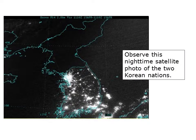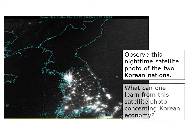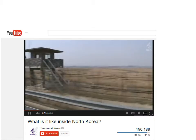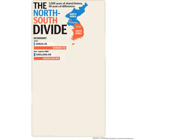Observe this nighttime satellite photo of the two Korean nations. What can one learn from this satellite photo concerning Korean economy? Here's their economy in gross domestic product and per capita gross domestic product, which means domestic product divided by the number of people living in the country. In both cases, the orange — representing South Korea — is much larger than the blue representing North Korea.